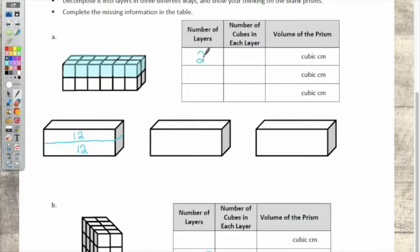Two. You have to get these in the correct order. The first one is layers, then the number of cubes. Twelve. And then the total volume.